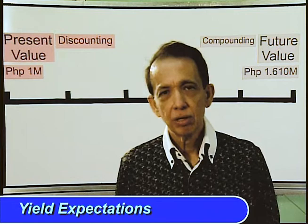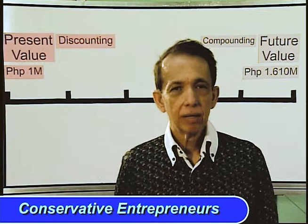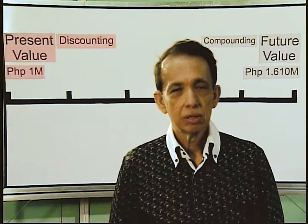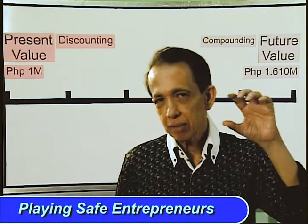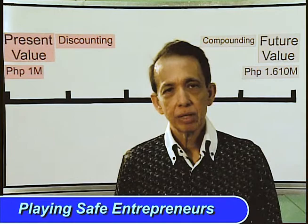Different entrepreneurs have different yield expectations or rate of return expectations from their investments. Some entrepreneurs are conservative — they want safe and solid investments, but the returns they get would be small. Other entrepreneurs would want their returns to be just above the lending rates of banks, so if the lending rates are 10%, they might want 15% up to 20%.